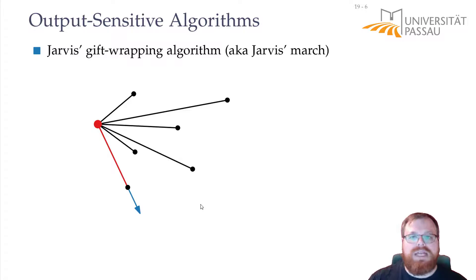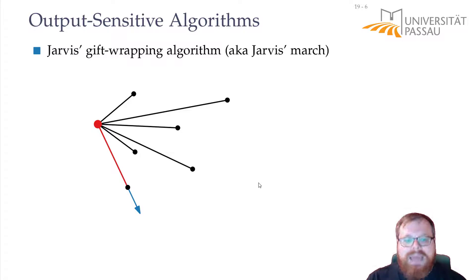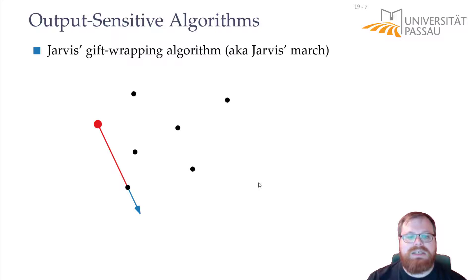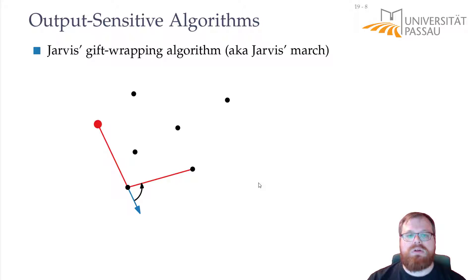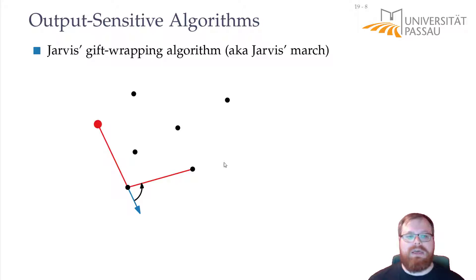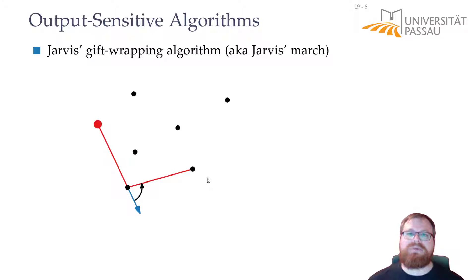Finding each subsequent vertex works the same way — we compare all the angles and find the smallest one, again in O(n) time. So this algorithm in total takes O(n²) time, because we have at most O(n) vertices on the convex hull, and in every step we add one and need O(n) time to compute it.